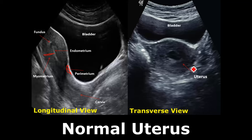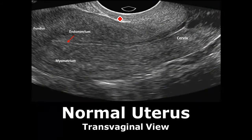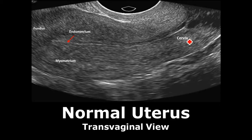In the transverse view, this is the appearance of the uterus below the bladder. In the transvaginal view, we see more detailed information — a zoomed-in view showing the endometrium more clearly, with the fundus on the top portion and the cervix on the bottom portion. The myometrium is also seen very clearly.